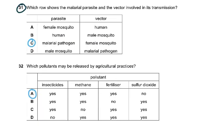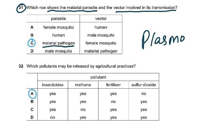Question 31. Which row shows the malarial parasite and the vector involved in transmission? The parasite is the malarial pathogen called Plasmodium. The malarial pathogen is Plasmodium, it's not a bacteria, not a virus, it's a protozoa, a unicellular animal. The vector is the female Anopheles mosquito, not all mosquitoes, not all female mosquitoes, only the female Anopheles. There are certain species which actually transmit malaria.